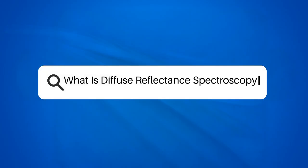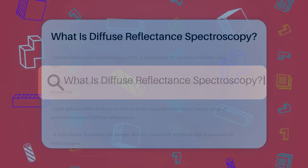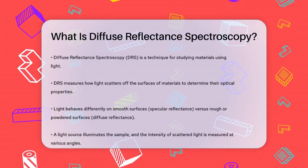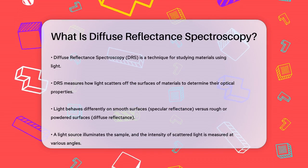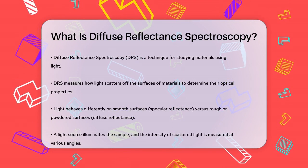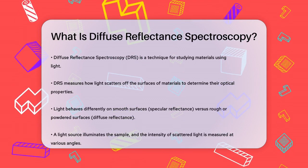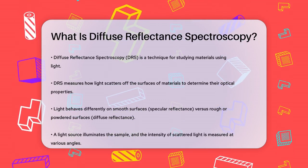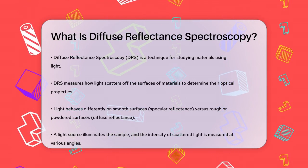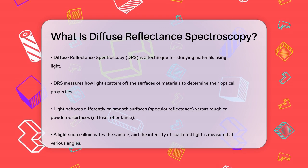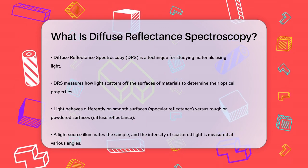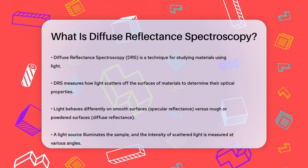What is Diffuse Reflectance Spectroscopy? Imagine you're trying to figure out what's inside a box without opening it. In the world of science, there's a technique that does something similar, but with light and materials. This technique is called Diffuse Reflectance Spectroscopy, or DRS for short.